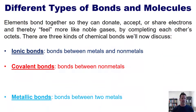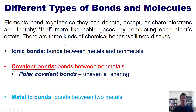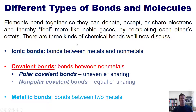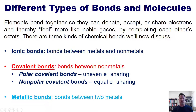Covalent bonds have two different subcategories. Polar covalent bonds are ones in which there is an uneven sharing of electrons, while non-polar covalent bonds are ones in which there is an equal sharing of electrons between the atoms.